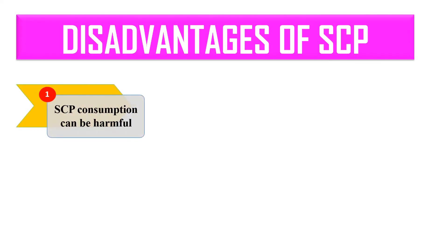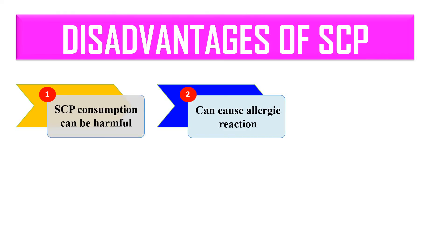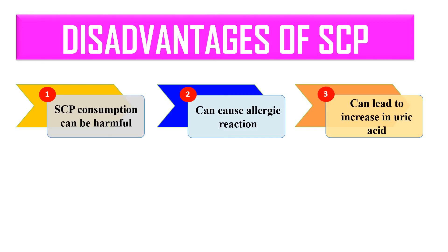Single cell proteins also have some disadvantages. Due to the restricted capacity of degrading nucleic acid, SCP consumption can be harmful for humans and can cause severe gastrointestinal problems. SCPs can also cause allergic reactions in some humans, particularly those with a sensitive digestive system. Additionally, the high content of nucleic acid leads to increased uric acid levels in the blood of individuals consuming SCPs.